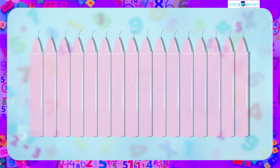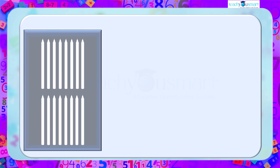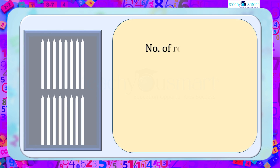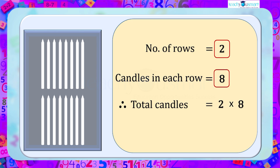Next, let's look at multiplication. We have a total of 16 candles. Let us arrange those in rows and columns. First, let's arrange the 16 candles in two rows of eight. We can verify that the total number of candles is two multiplied by eight equals 16 candles.